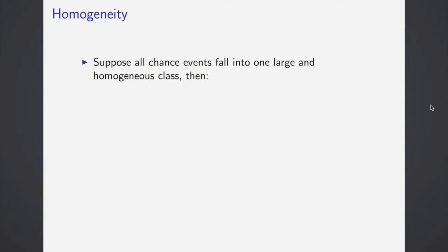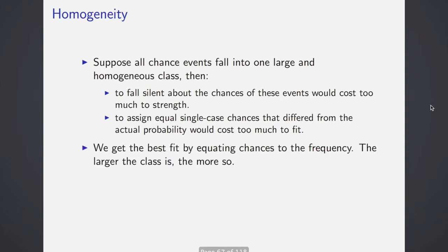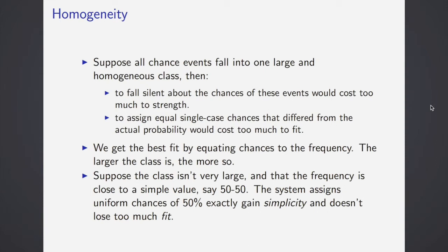He also introduces this notion of homogeneity. Suppose all chance events fall into one large homogenous class, then to fall silent about the chances of these events would cost too much to strength. To assign equal single case chances that differed from the actual probability, that would cost too much to fit. We get the best fit by acquainting chances to the frequency, and the larger the classes, the more so. Suppose the class isn't very large, and that the frequency is close to a simple value, say 50-50. The system assigns uniform chances of 50% exactly, gain simplicity, but don't lose much fit.